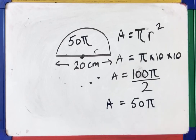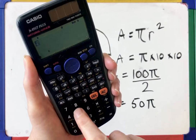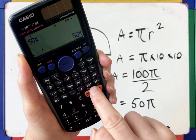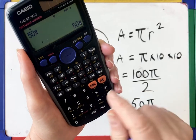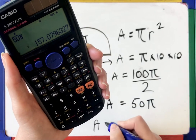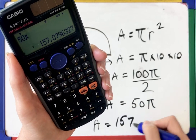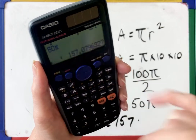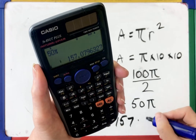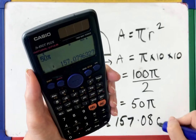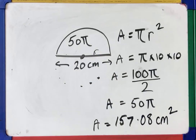On the calculator: 50 shift pi, press the S to D button — I call it the scooby-doo button — and we get 157.08 centimetres squared. The units for area are centimetres squared.